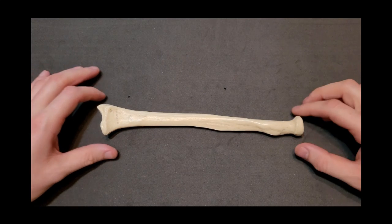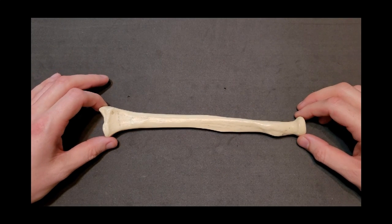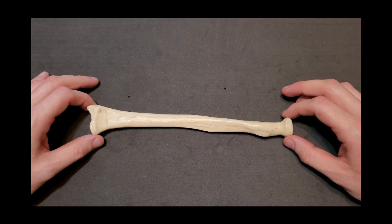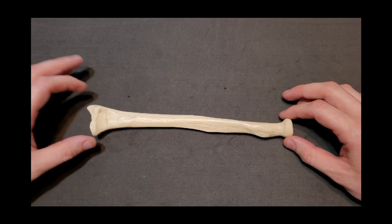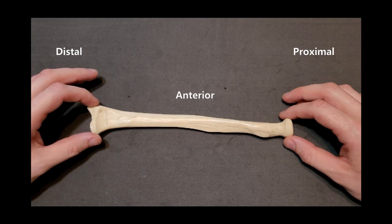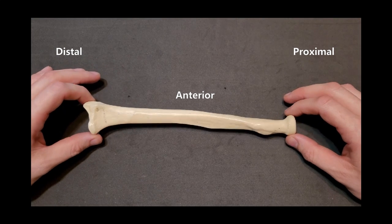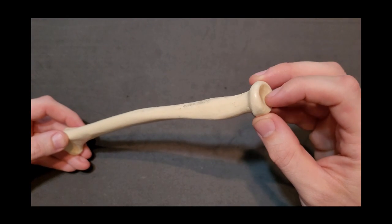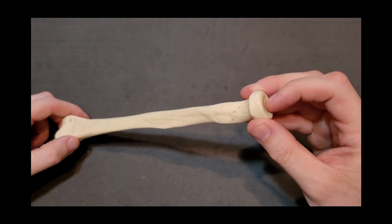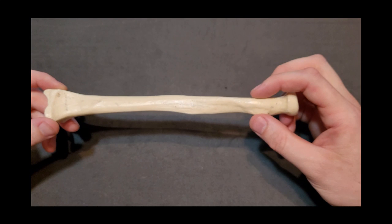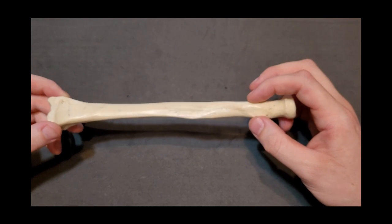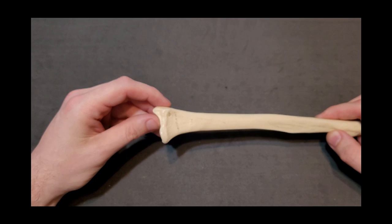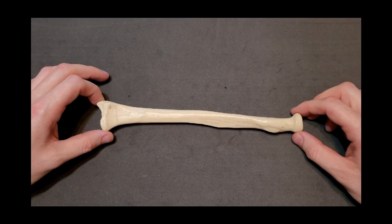Moving to the radius — a right radius in anterior view. The head is proximal with a concave surface called the fovea capitis for the capitulum of the humerus. There's the bicipital tuberosity on the proximal shaft, a styloid process distally, and articulation with the carpal bones. The anterior surface is smooth while the posterior surface has bumps and grooves.